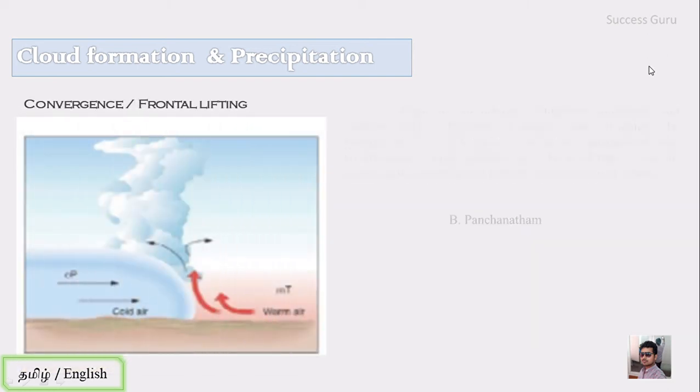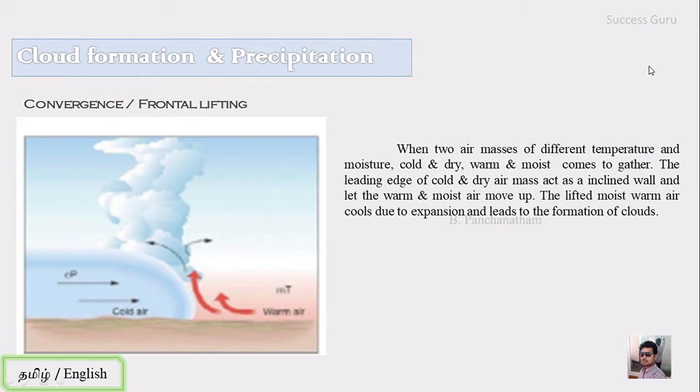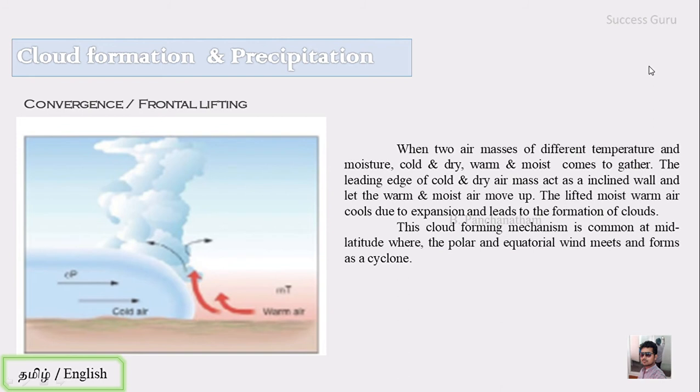The next one is convergence or frontal lifting. This happens when two air masses of different temperature and moisture—for example, cold and dry versus warm and moist—come together. The leading edge of the cold and dry air mass acts as an inclined valve, letting the warm and moist air move upward. As you know, colder wind is denser compared to warmer wind, so the warmer wind rises while the colder wind stays at the bottom. The lifting moist warm air cools due to expansion, leading to cloud formation.